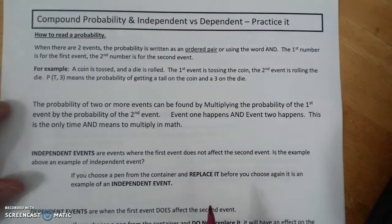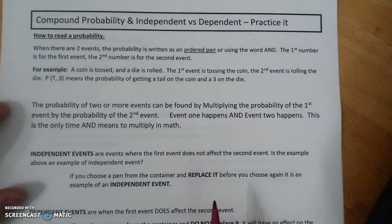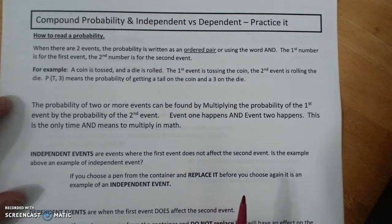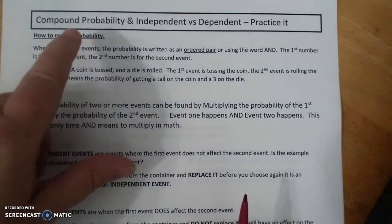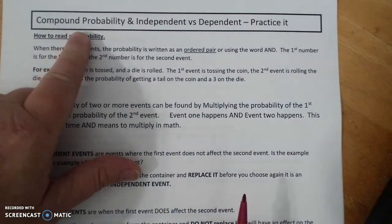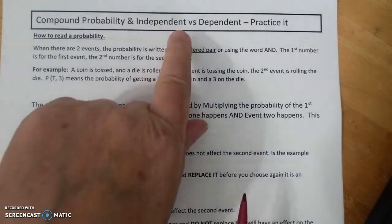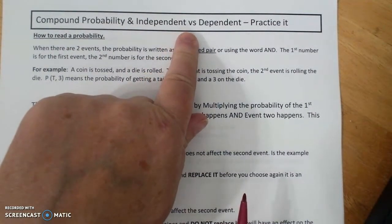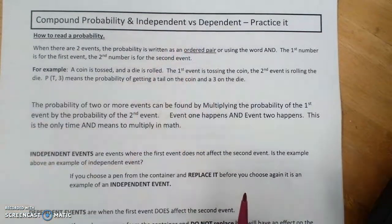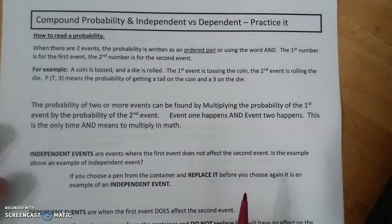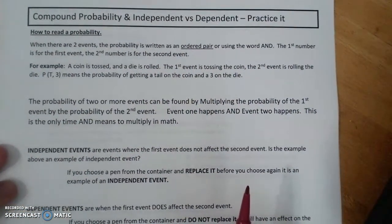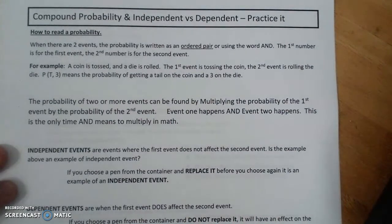In the probability unit, we have done simple probability, discussed sample spaces, and done tree diagrams. Now we're going to do two concepts: compound probability, and then determining whether a probability is an independent or dependent event. First, we're going to go over how to read a probability.